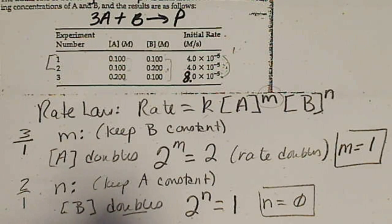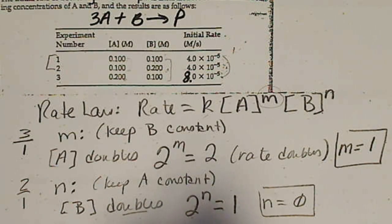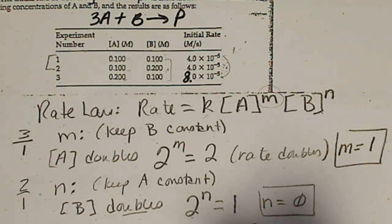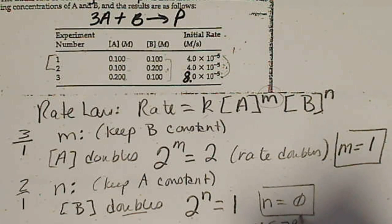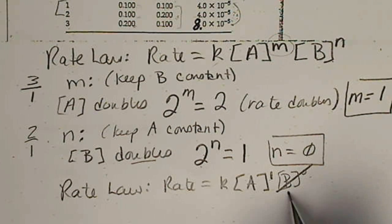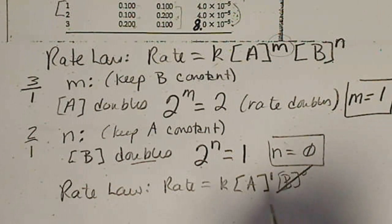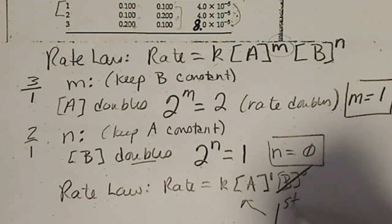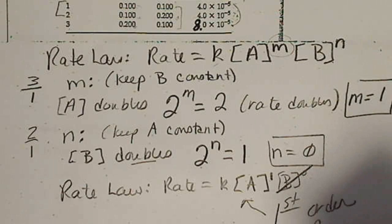And our rate law is rate equals K times A to the first power, B to the 0 power, but that means B would not affect the rate. We're going to end up seeing that this results in a first order rate law.